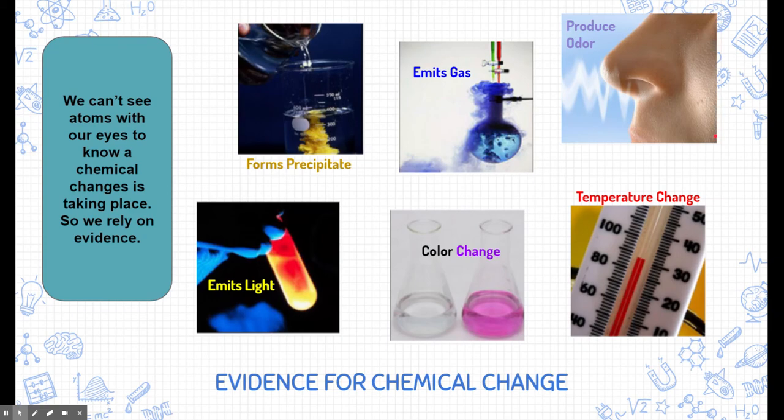Evidences for chemical change. Typically, we can't see atoms with our eyes. So it's not really easy for us to know whether chemical change is taking place because we can't see what's happening at the molecular level. So we have to rely on evidences. And here are six different evidences that you would see to really get an idea of whether chemical change is taking place.